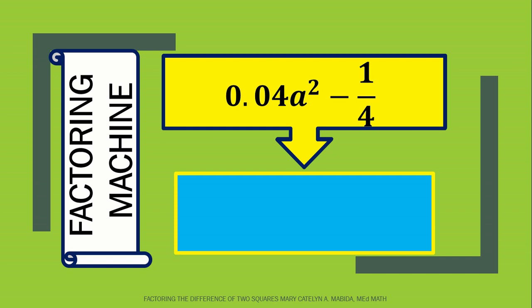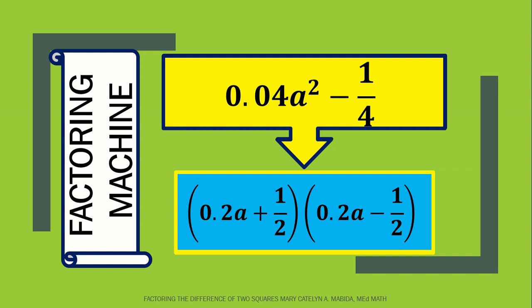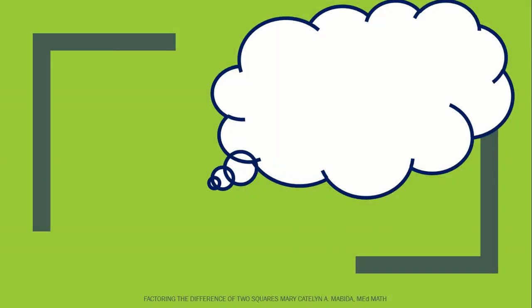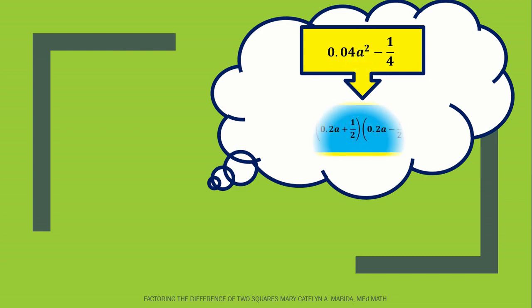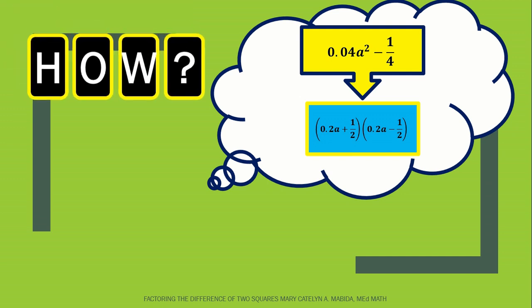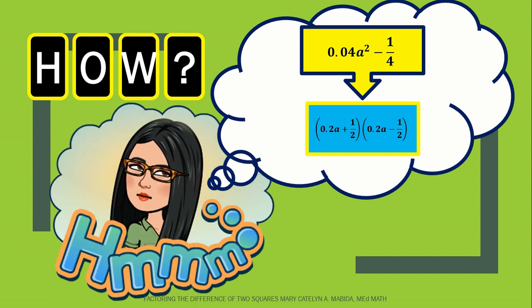Now one more example. 4 hundredths a squared minus 1 fourth. The answer? That's correct! It is the sum and difference of 2 tenths a and 1 half. But how? Let's find out.